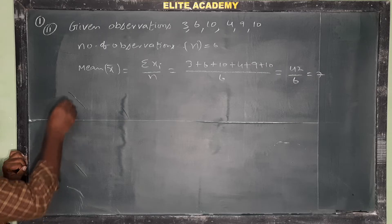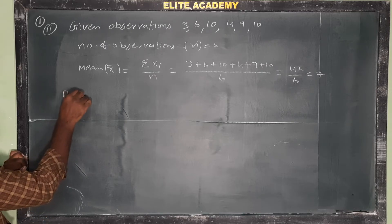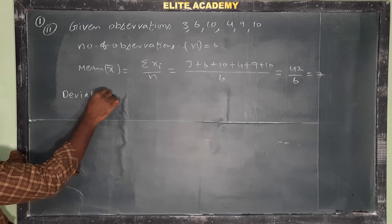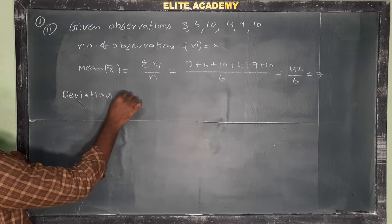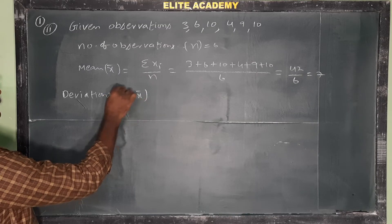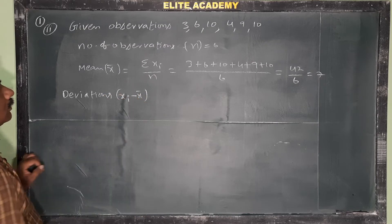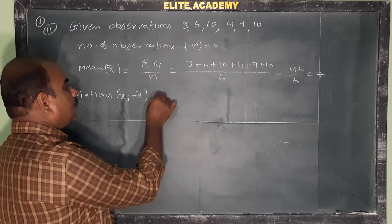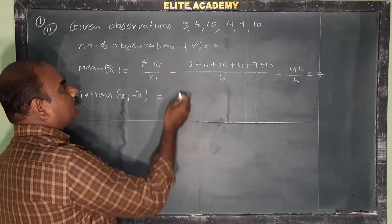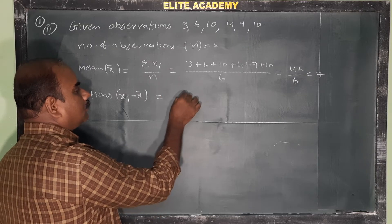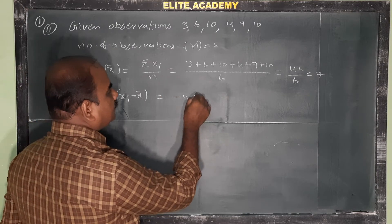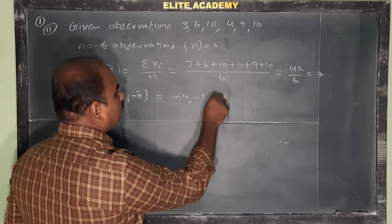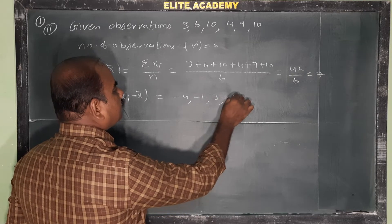Next, deviations. So deviations xi minus x bar. So 3 minus 7 is minus 4, 6 minus 7 is minus 1, 10 minus 7 is 3, 4 minus 7 is minus 3, 9 minus 7 is 2, 10 minus 7 is 3.